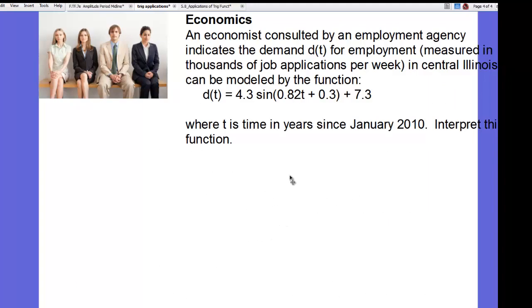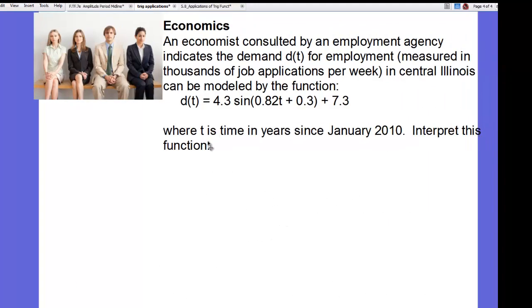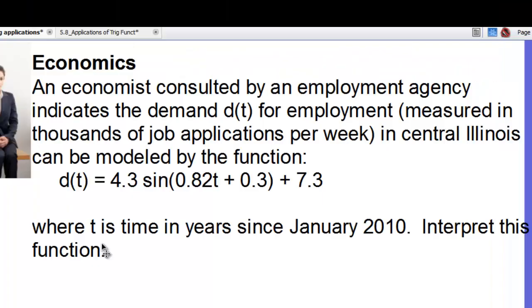Last thing we're going to look at is an economics application. Let's assume an economist consulted by an employment agency looked at the demand for employment in central Illinois and found that it can be modeled by the function that you see here, 4.3 times the sine of 0.82T plus 0.3, all plus 7.3, where T is the time in years since January of 2010. Let's interpret this function.